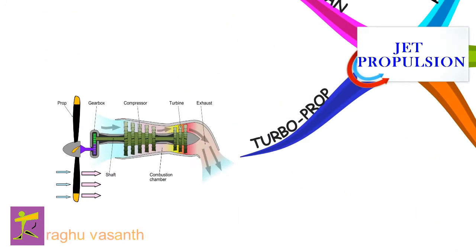A turboprop engine is a turbine engine that drives an aircraft propeller. In contrast to a turbojet, the engine's exhaust gases do not contain enough energy to create significant thrust, since almost all of the engine's power is used to drive the propeller.